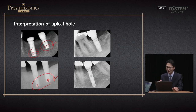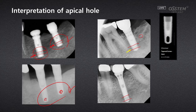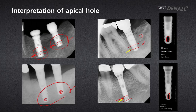Looking at the apex area, the apical hole needs to be read carefully. In the top right image you can see the apical hole shown as a translucent line, and on the bottom image there is an oblong hole. In the top right, the image shows the hole — this is Zimmer's Tapered Screw implant. On the left, as shown in yellow, there is an oblong hole — this is Zimmer's Advent implant.